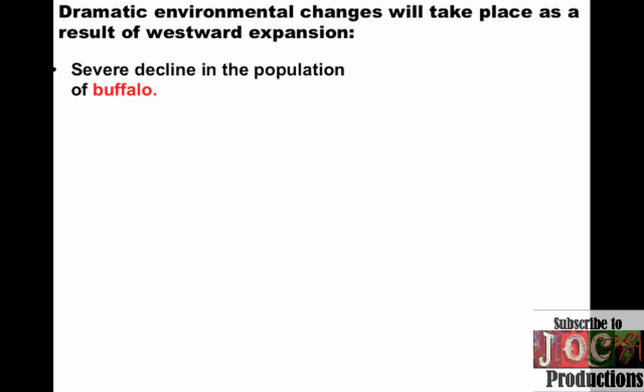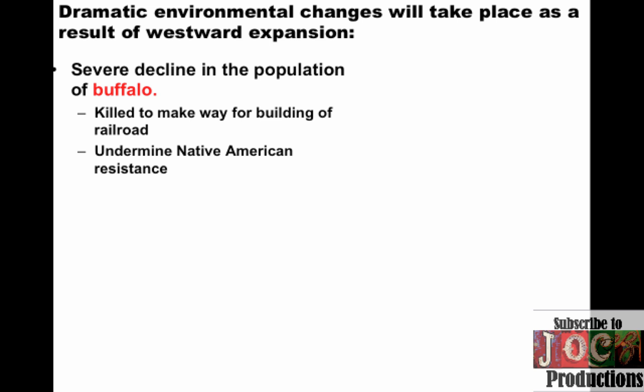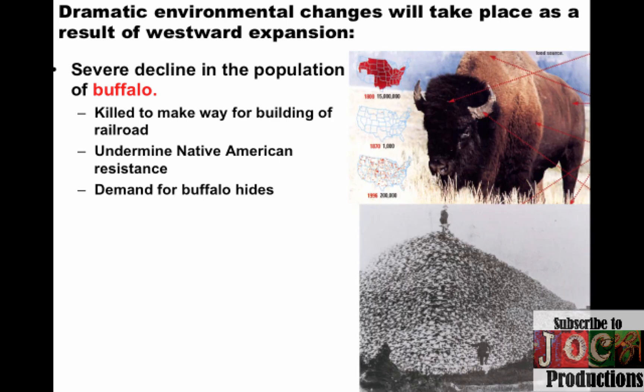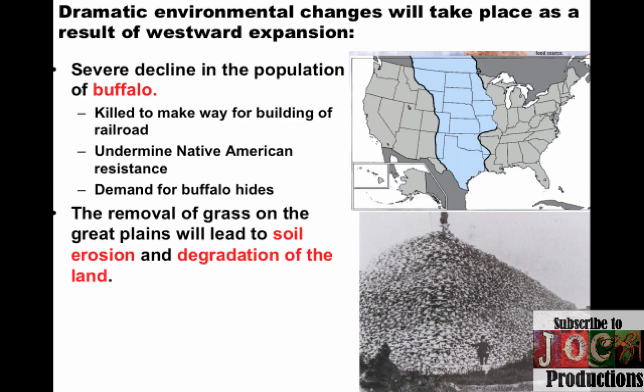With this movement west, there was a dramatic environmental impact. The biggest example is the huge population decline of the buffalo — killed to make way for the railroad, to undermine Native American resistance by destroying a central part of their culture, and due to high demand for buffalo hide in eastern markets. Images show the drastic decline and buffalo skulls from mass slaughter. Another key environmental change is the removal of grass on the Great Plains to develop homesteads, which led to soil erosion and degradation of the land from over-planting.